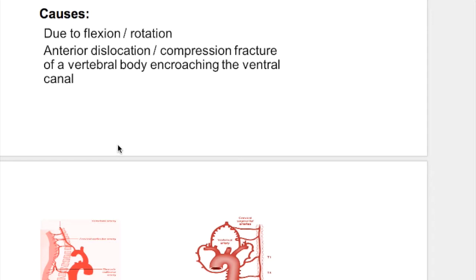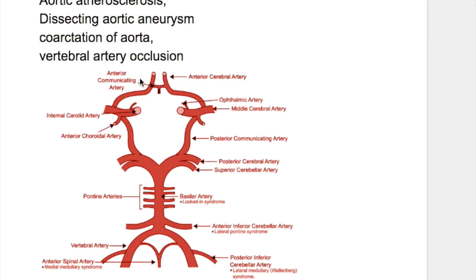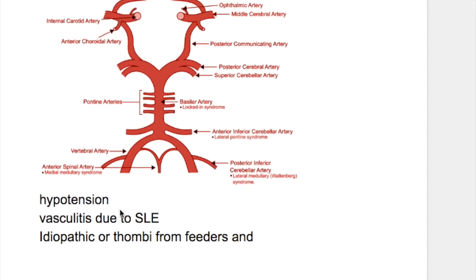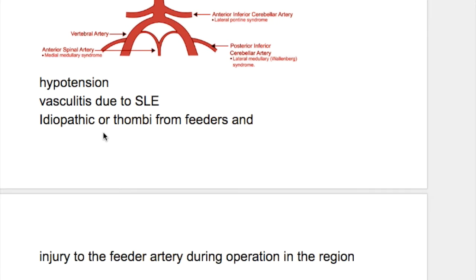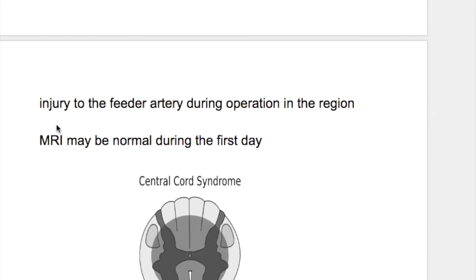Causes of anterior spinal artery syndrome include forceful flexion or rotation of the neck causing anterior dislocation and compression fracture of the vertebral body encroaching the ventral canal. It may also be caused by aortic atherosclerosis, dissecting aneurysm of the aorta, or coarctation of the aorta — where there is hypertension in the upper limbs and hypotension or pulselessness in the lower limbs. Additional causes include vertebral artery occlusion, severe systemic hypotension, vasculitis due to SLE, or thrombi from and injury to feeder arteries during surgery in that region.